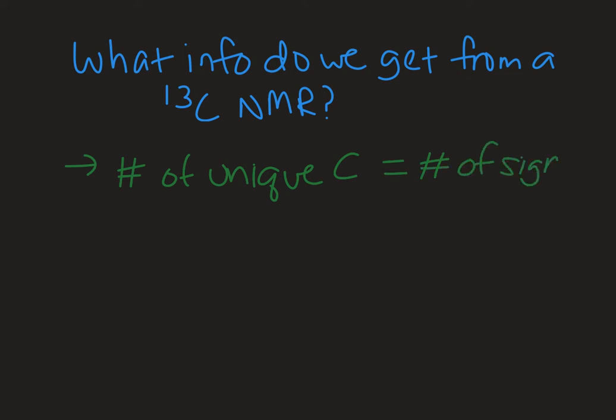This is the same thing we see in a proton NMR. If we have five unique types of protons, we see five signals. If we had five unique carbons, we'd see five signals in the carbon-13 NMR.